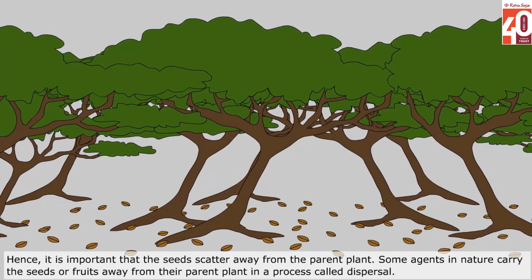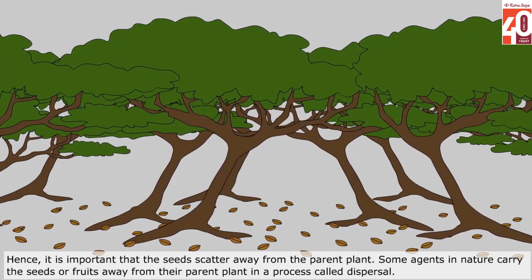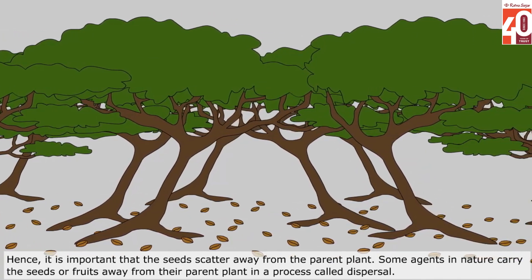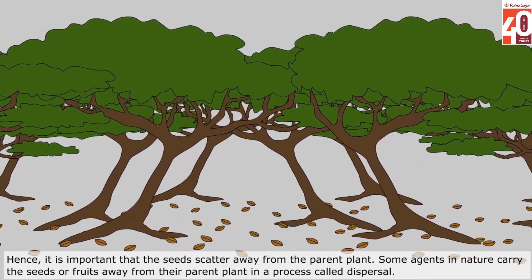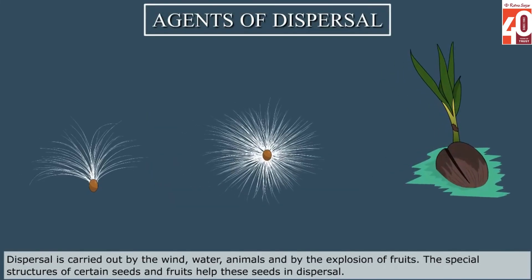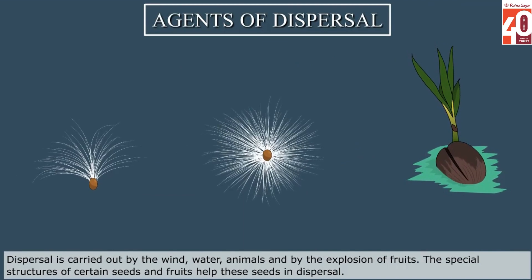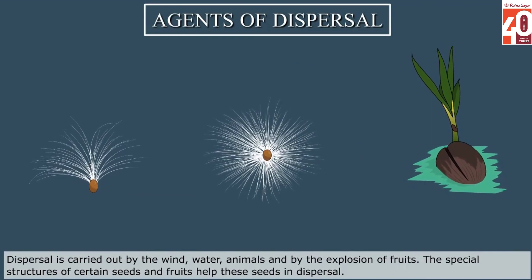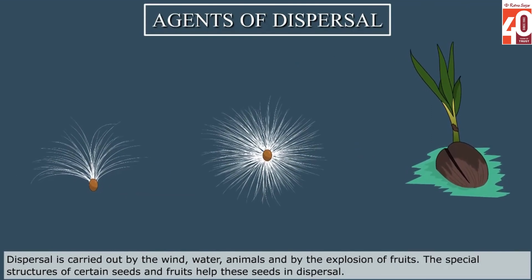Some agents in nature carry the seeds or fruits away from their parent plant in a process called dispersal. Dispersal is carried out by the wind, water, animals and by the explosion of fruits. The special structures of certain seeds and fruits help these seeds in dispersal.